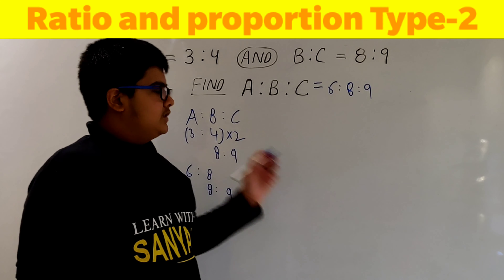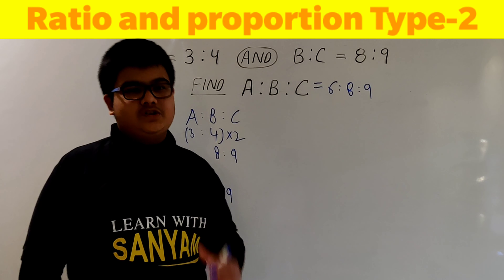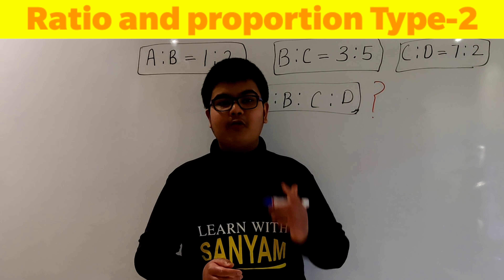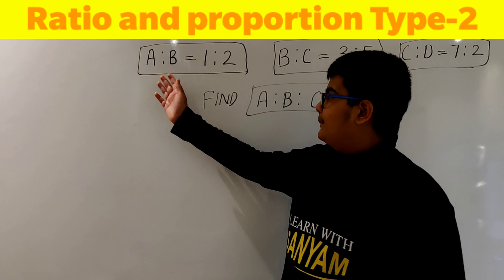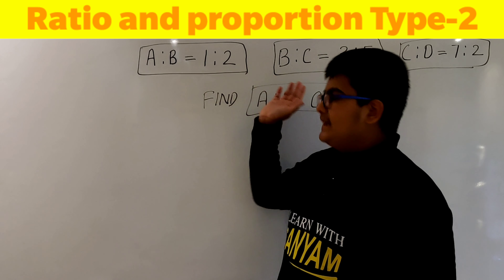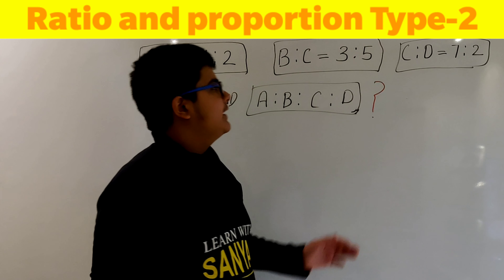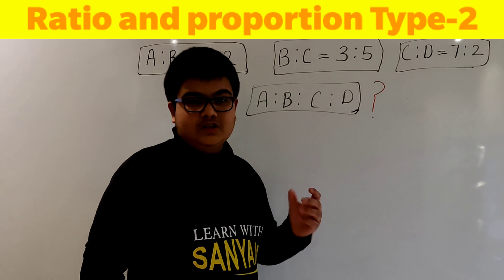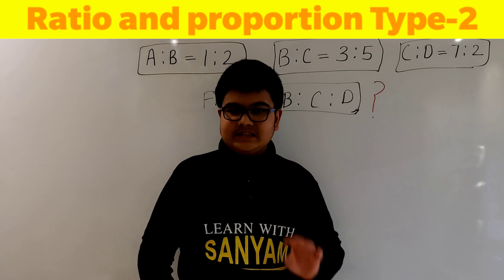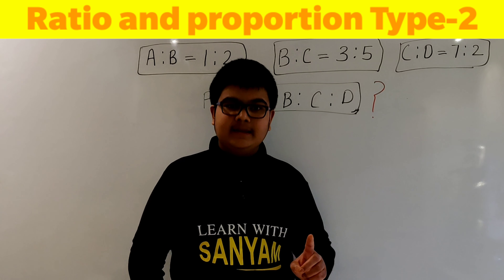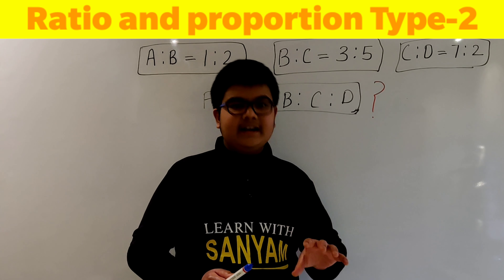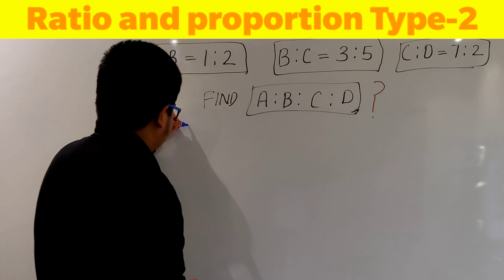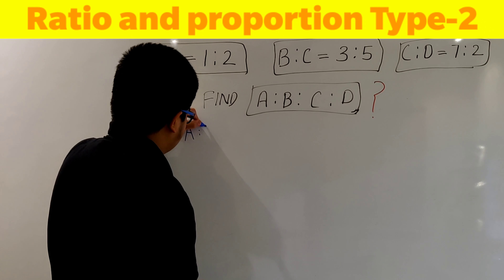In this way we can solve questions based on continuous ratios. This same method can be used to find the continuous ratio of 4 numbers. For example, A:B = 1:2, B:C = 3:5, and C:D = 7:2, and we have to find A:B:C:D. We will first find A:B:C and then combine it with C:D.